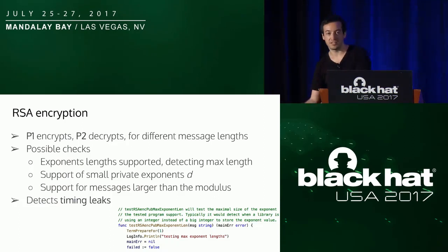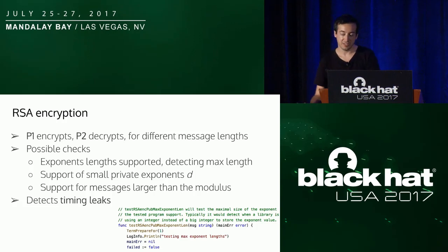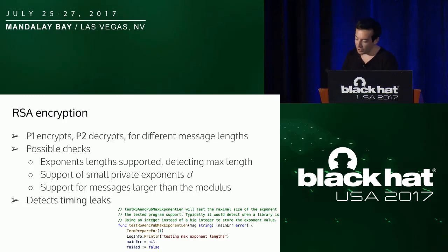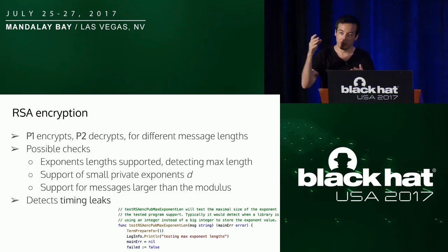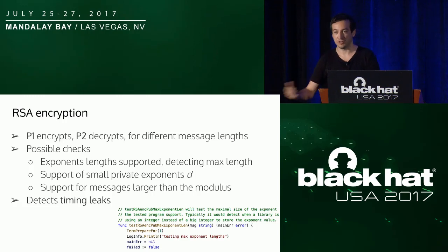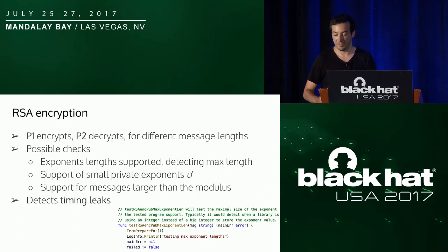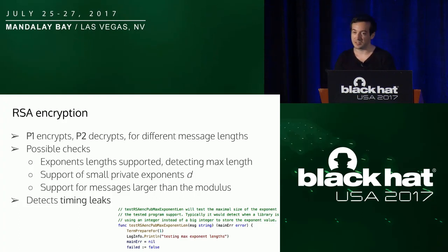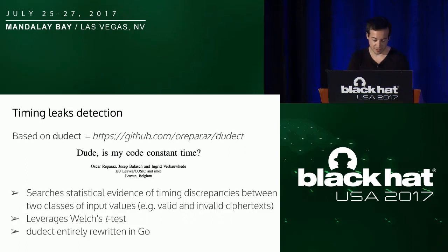For RSA encryption, P1 encrypts and P2 decrypts. We try different sizes of messages. RSA can have different sizes of modulus, essentially proportional to the message size. To sign, you raise a number to the power of the public exponent. The public exponent should normally be small so encryption is faster. The decryption exponent, usually denoted D, should be very large because it should be totally unpredictable. You should not have a small D — if D is very small, something is definitely wrong. You can test whether your library performs this check. You can also test what happens if you send a message bigger than what the function expects.